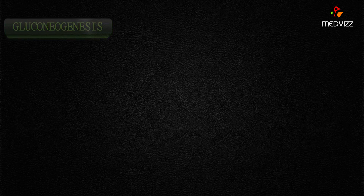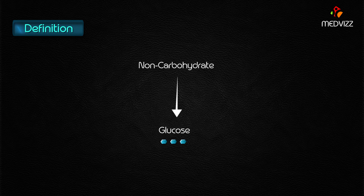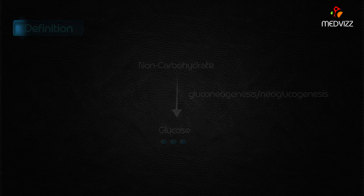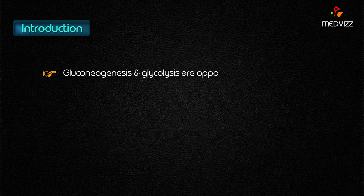Gluconeogenesis. The synthesis of glucose molecules from non-carbohydrate precursors is known as gluconeogenesis or neoglucogenesis. Gluconeogenesis is nothing but the formation of new glucose, and glycolysis means the breakdown of glucose — they are exactly opposite pathways.